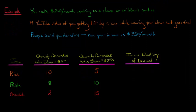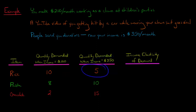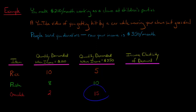That extra income is going to change the quantity you demand of certain items. Let's think about the food you eat: rice, pasta, and chocolate bars. When your income was $200 a month, you demanded 10 bags of rice, 8 boxes of pasta, and 2 chocolate bars. Now that your income is $350 a month, you're only demanding 5 bags of rice — your demand for rice has actually gone down.